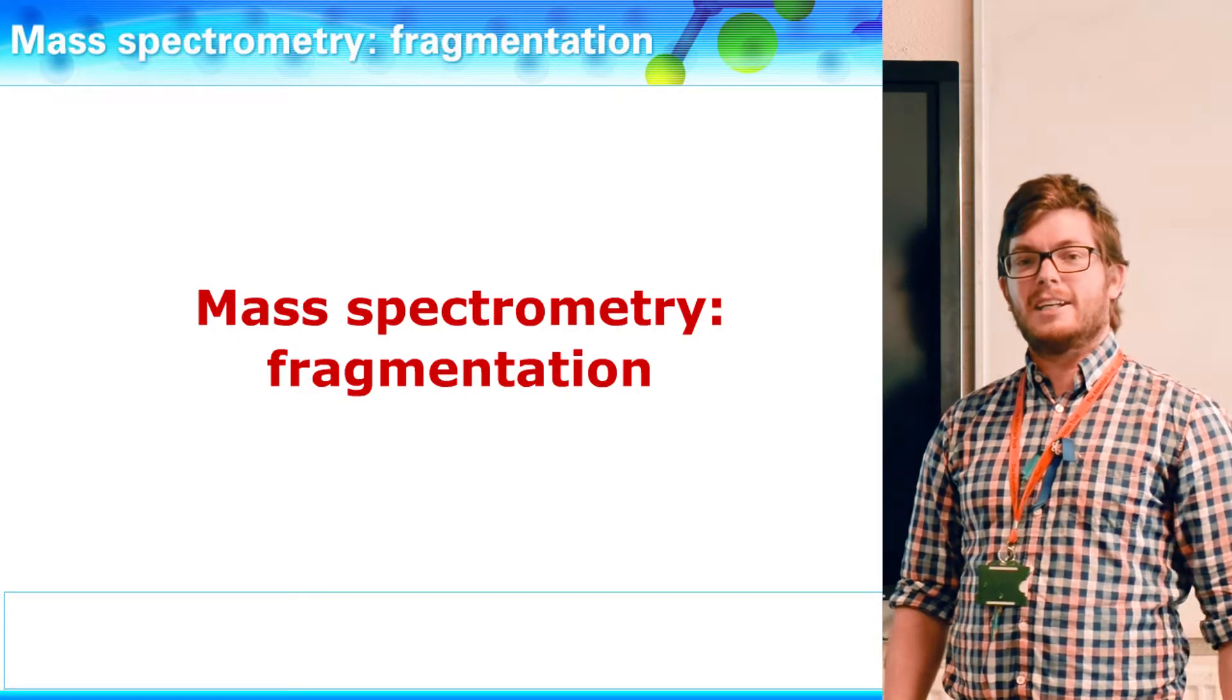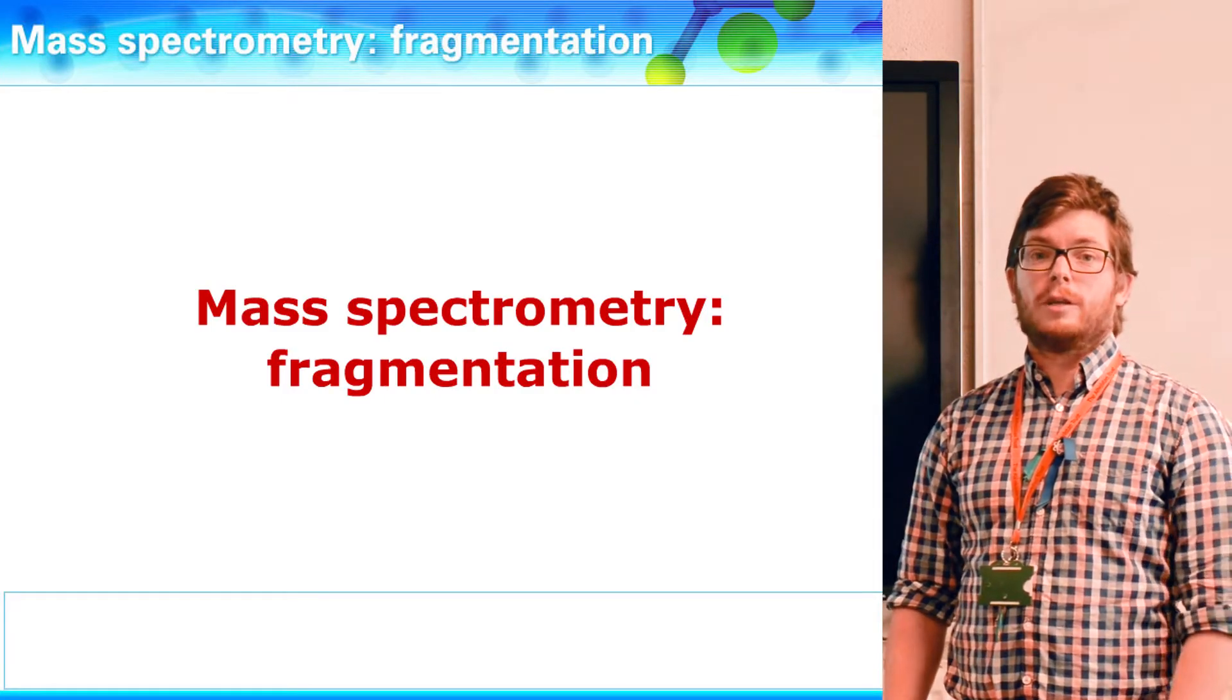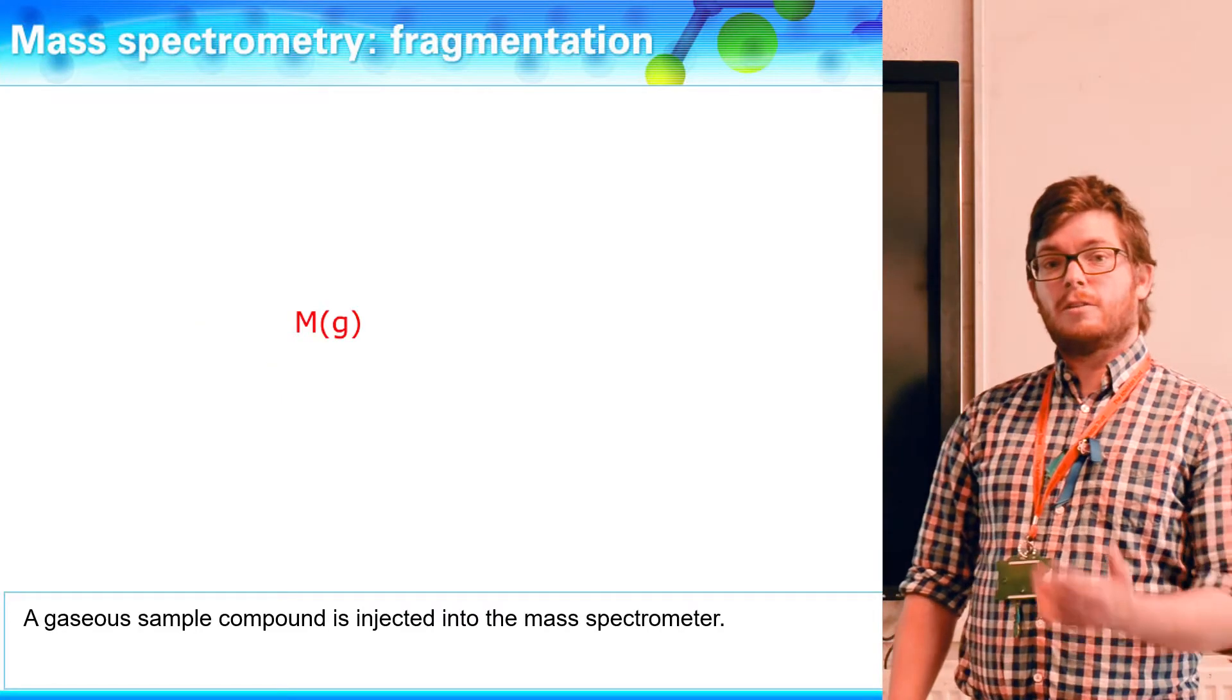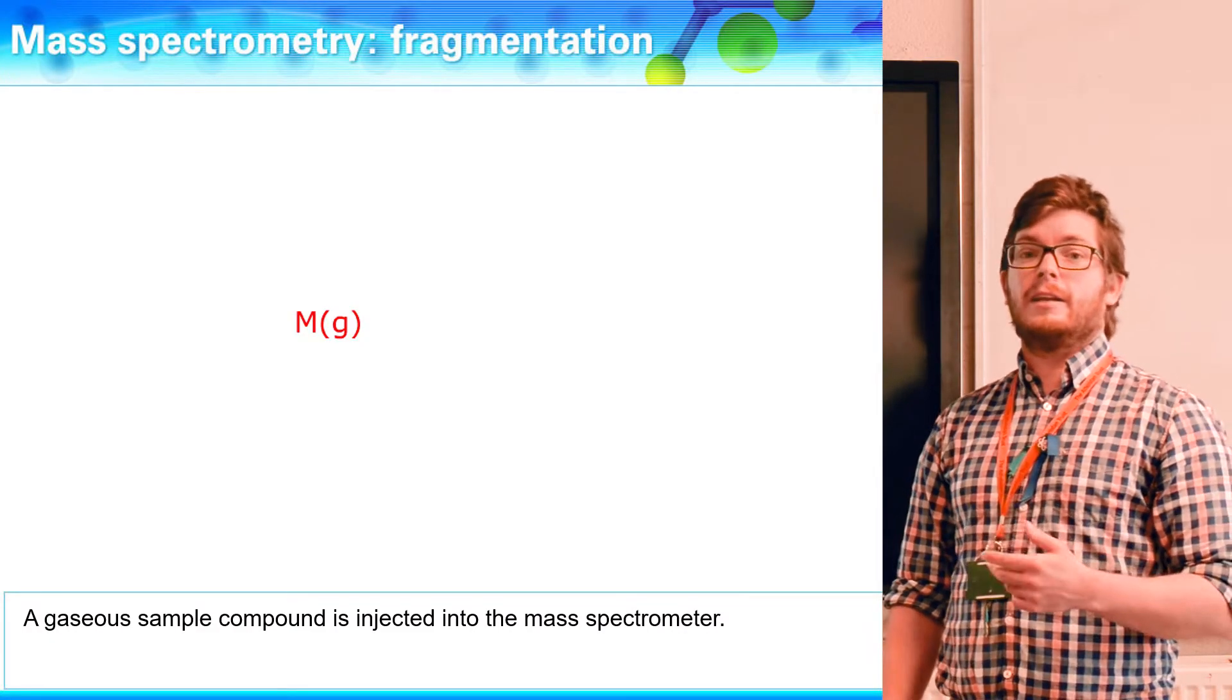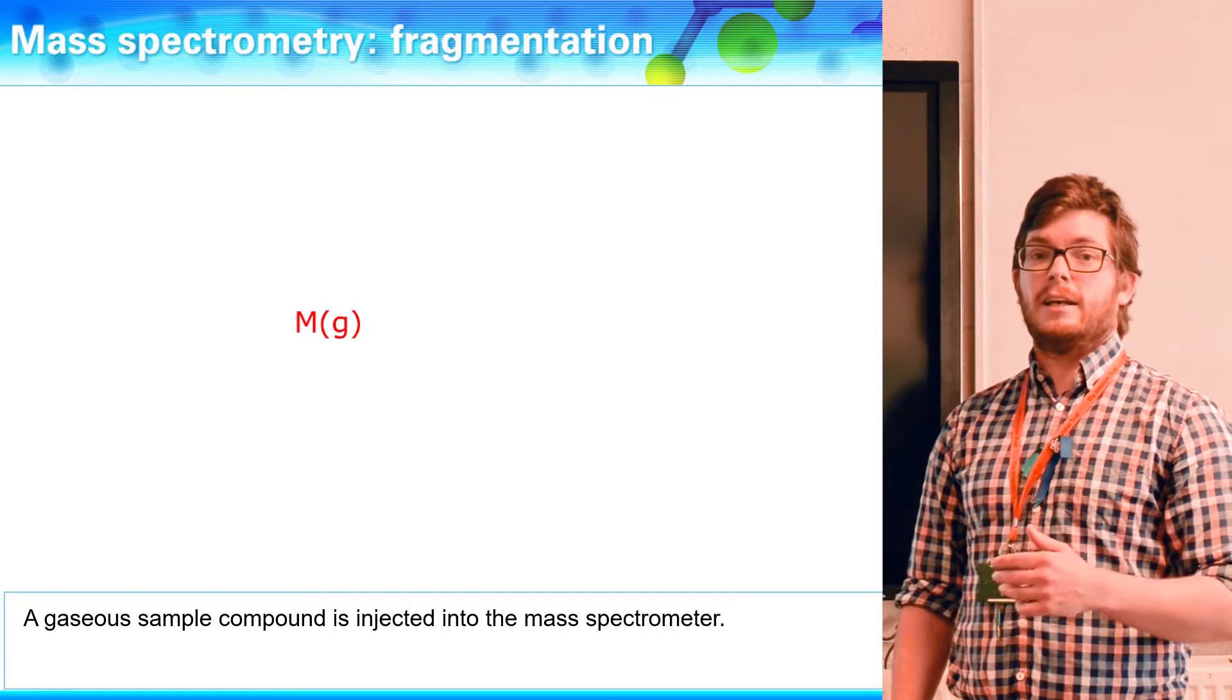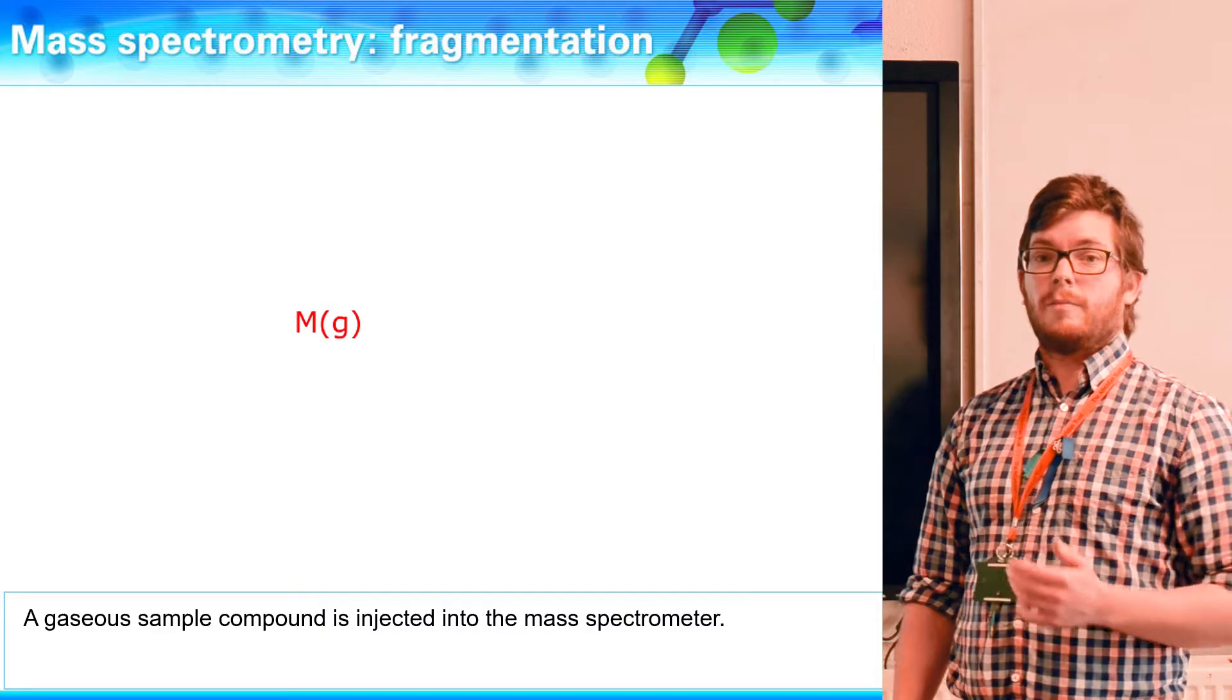So interpreting the fragmentation patterns and understanding how to actually read the mass spectrums that you're given in the exam. First thing we need to remind ourselves of is how we actually treat the sample. When the sample goes in, it needs to be in its gaseous state. It needs to be able to be vaporized so we can then run it through the mass spectrometer.